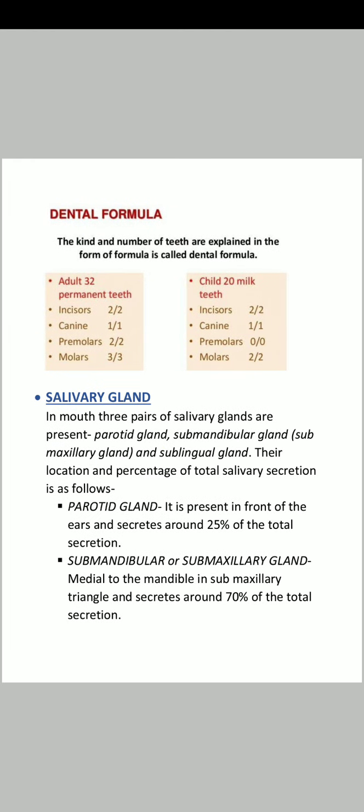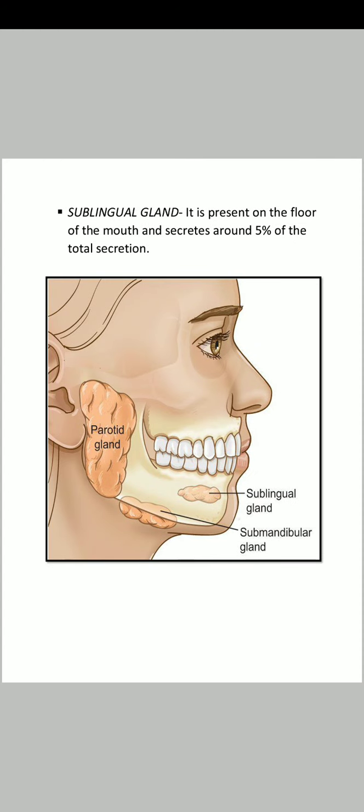Next are salivary glands. As mentioned earlier, we have 3 pairs of salivary glands: parotid gland, submandibular gland (also called submaxillary gland), and sublingual gland. The parotid gland is present in front of the ear and produces 25% of total salivary secretion. The submaxillary gland is on the medial side of the mandible in the submaxillary triangle. The sublingual gland produces 5% of salivary secretion and is present on the floor of the mouth.